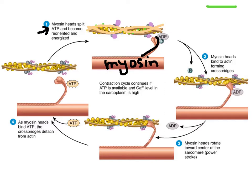Our bodies use energy in the form of a molecule called ATP, which stands for adenosine triphosphate — basically the body's version of fuel. The myosin splits ATP into a larger molecule called ADP and a tiny molecule called phosphate. That phosphate hangs out waiting to be reunited with the ADP, and the ADP allows the energy for the myosin to make its connection with actin.